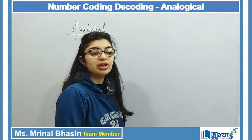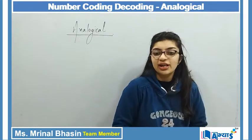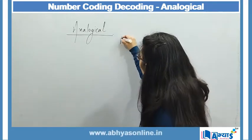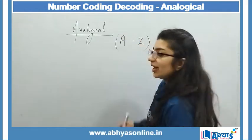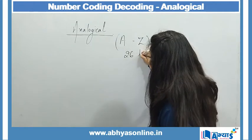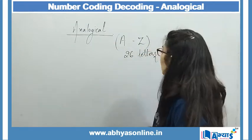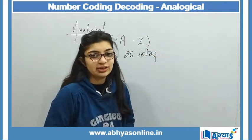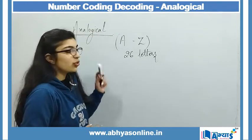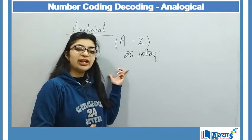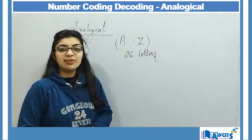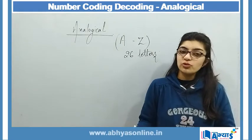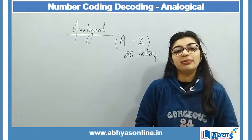Analogical coding and decoding is different from other types of coding and decoding. In other coding, our letters are A to Z — 26 letters — and each letter has a predefined place value. In analogical coding and decoding, these place values are not fixed as A equals 1. Instead, they are already given in the question, and from those place values we have to deduce the remaining answers.